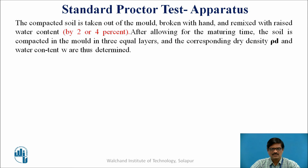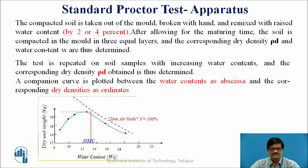This process covers trial number 1. We shall then go for a number of trials with increased water content. For a second trial, we increase the water content usually by 2 to 4 percent and repeat the same process. In the second trial, we also get a dry density and water content. We move to the next trial with increased water content and repeat the process again, so we obtain a number of dry densities corresponding to different water contents. The test is repeated on soil samples with increasing water content and the corresponding dry densities are determined. All this data is used to plot a curve called the compaction curve.